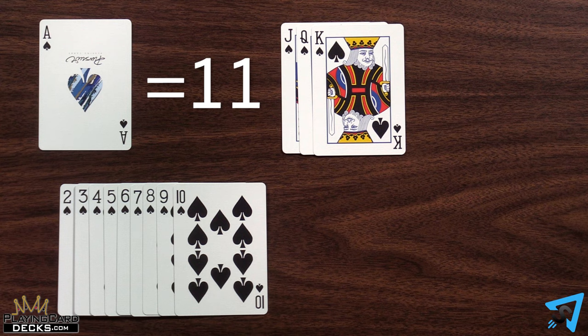Aces are worth 11 points, face cards are worth 10, and numbered cards are worth their pip value.